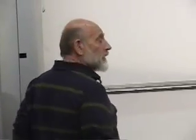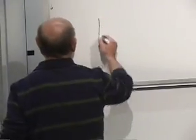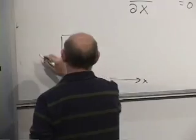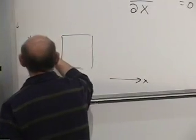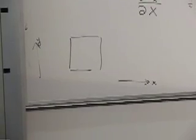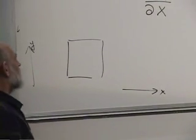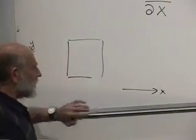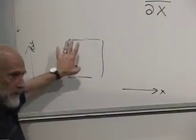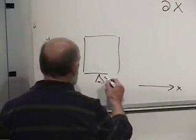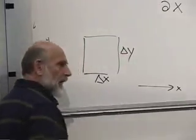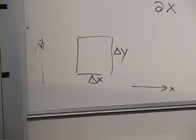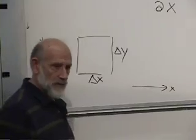Now let's move on to two dimensions — I'm going to call the two directions x and y. In a small interval of time, what is the decrease in the number of points in this little rectangle? Let's take the rectangle to be of size delta x and delta y. How many points are entering and leaving on the various sides? The number of points coming in from the left vertical side is proportional to the x-component of velocity, vx, at the left-hand end, times delta y.